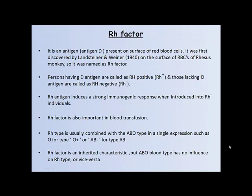Rh factor is antigen D present on the surface of RBCs. It was first discovered by Landsteiner and Wiener in 1940 on the surface of RBCs of rhesus monkeys, so it is called the Rh factor. Persons having D antigen are called Rh positive and those lacking D antigen are called Rh negative. Rh antigen induces a strong immunogenic response when introduced into Rh negative individuals. Rh factor is also important in blood transfusion. Rh type is usually combined with the ABO system in a single expression such as O positive or AB negative. Rh factor is an inherited characteristic, and ABO blood type has no influence on Rh type or vice versa.